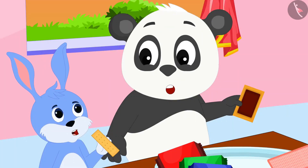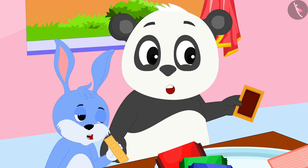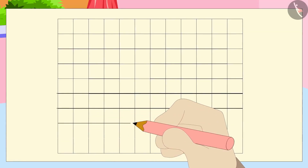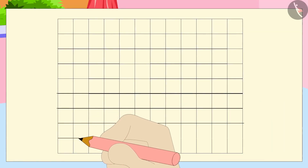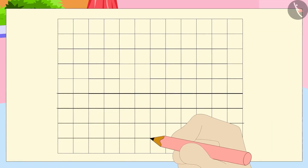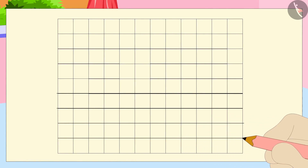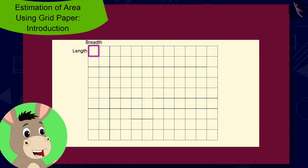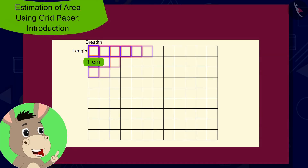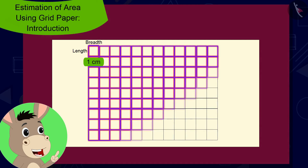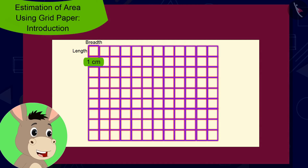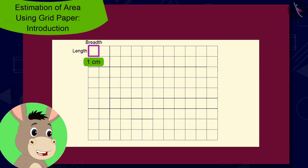Bunni and Golu could not understand anything. Then Bhola made equal sized squares on a paper. A paper made of equal sized squares like these is called a grid paper, said Bhola.